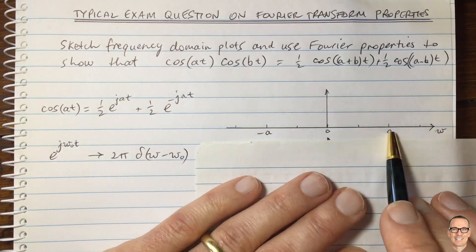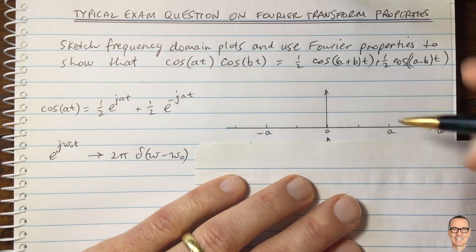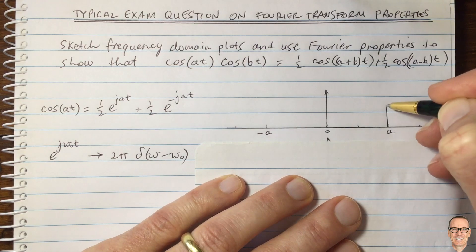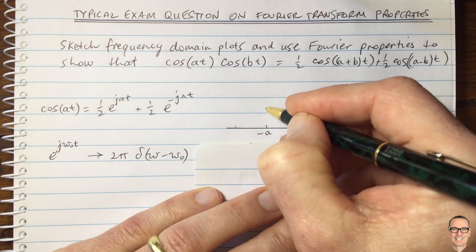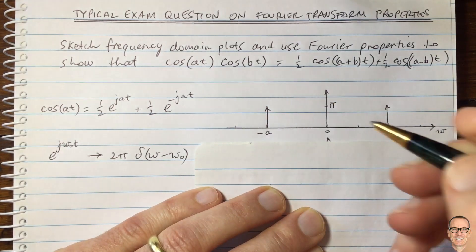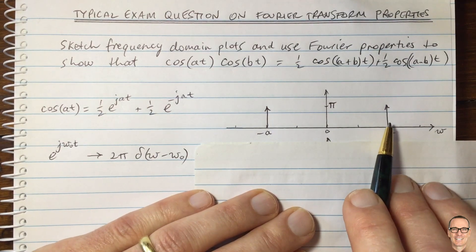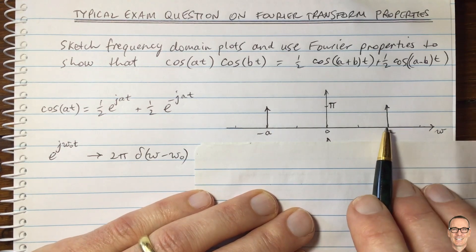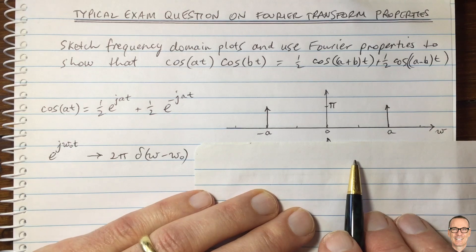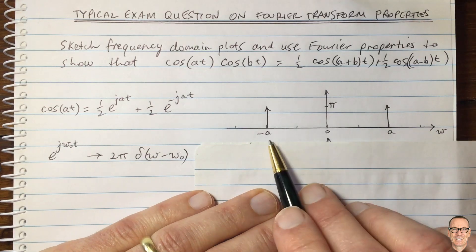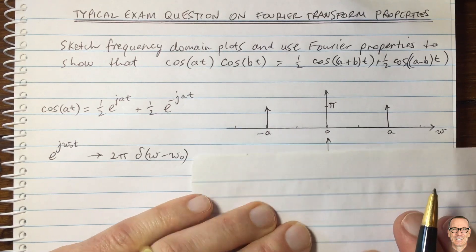Let's plot that: on the ω axis, at +a we have a delta function of height π, and at −a we have a delta function of height π. For more information about the height — or more accurately, the area — of delta functions, there's a link in the description below. This is the Fourier transform of cos(at).